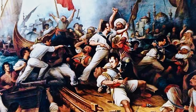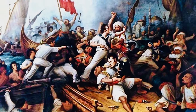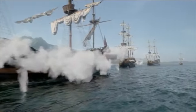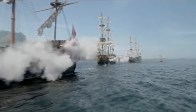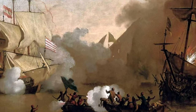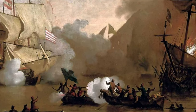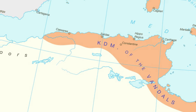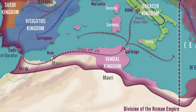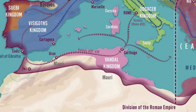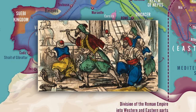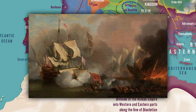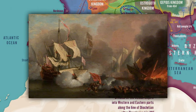The Barbary Wars refers to a series of naval battles fought across two wars by the United States, Sicily, and Sweden against the pirates that were acting out of the Barbary states located in northern Africa. Operating mainly out of Tunis, Tripoli, and Algiers, pirates had been capturing ships and raiding cities across the Mediterranean since the mid-1500s.